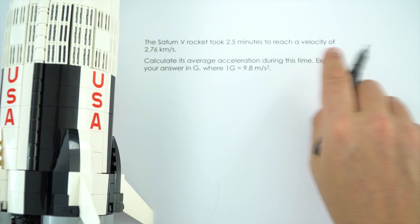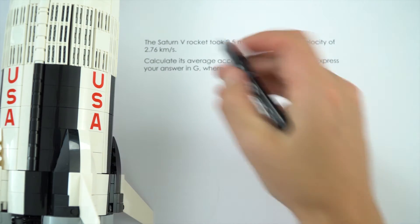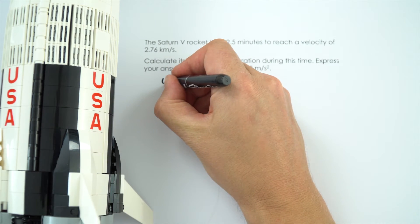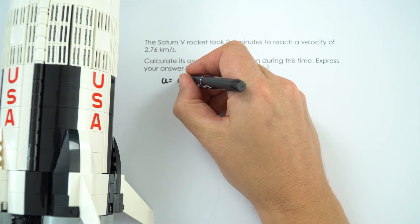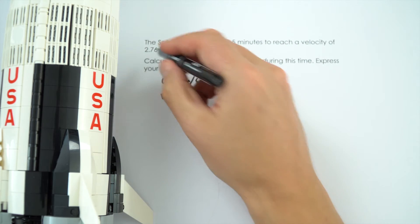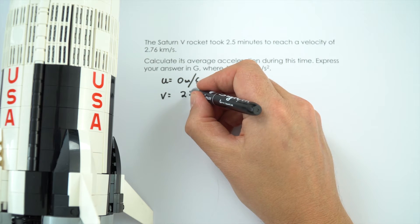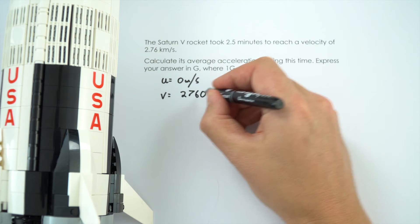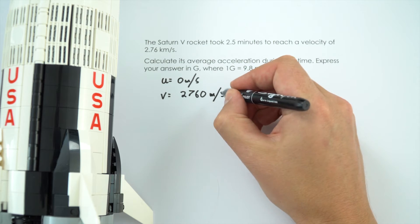So my approach to this is I'm going to write down what I know. So what we know is that initially this is the launch pad and its initial velocity was 0 metres per second. Its final velocity is given up here in kilometres per second so I'm going to convert that to 2,760 metres per second.